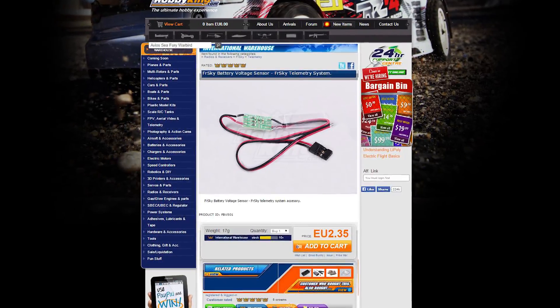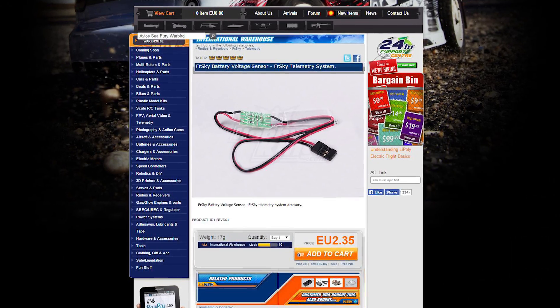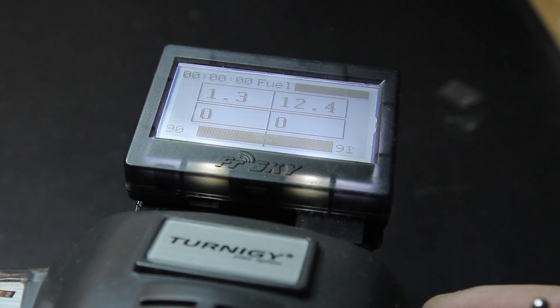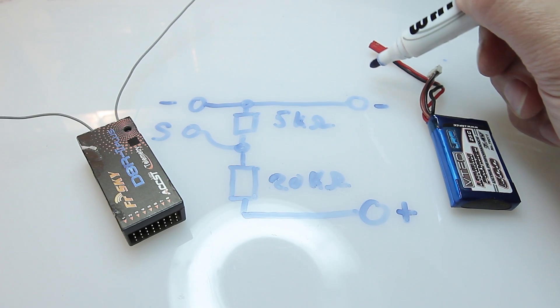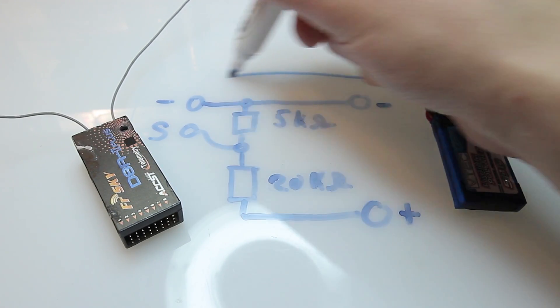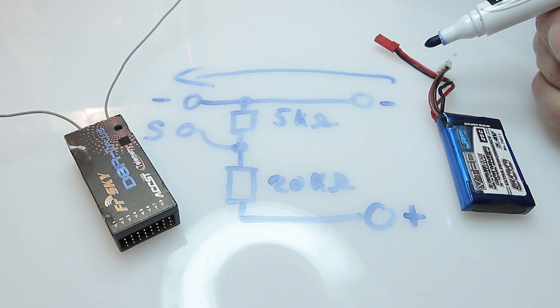You can buy a ready-made voltage sensor on Hobbyking, but it's also very easy to build one yourself. You only need some few components to connect your battery with your receiver. All you need is one resistor with 20kΩ and a 5kΩ potentiometer.